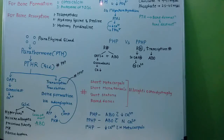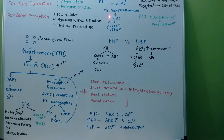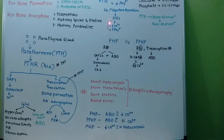As already mentioned, parathormone increases calcium and decreases phosphate. So, what happens in hypoparathyroidism? In primary hypoparathyroidism, parathormone levels are decreased — the secretion from the gland is reduced. So, there will be decreased calcium levels and increased phosphate levels in primary hypoparathyroidism.